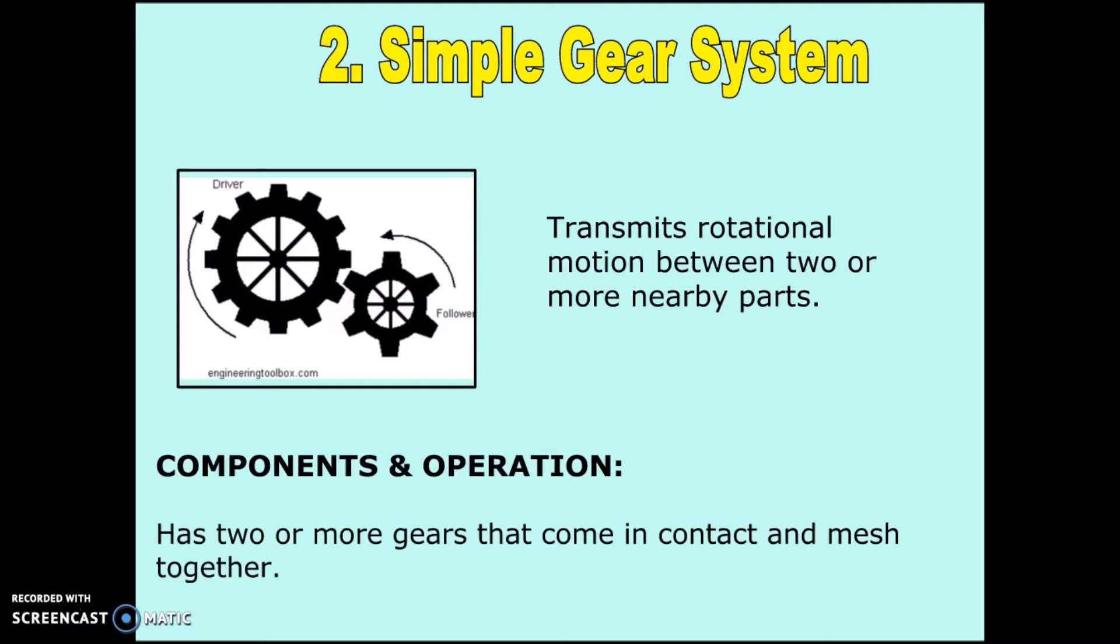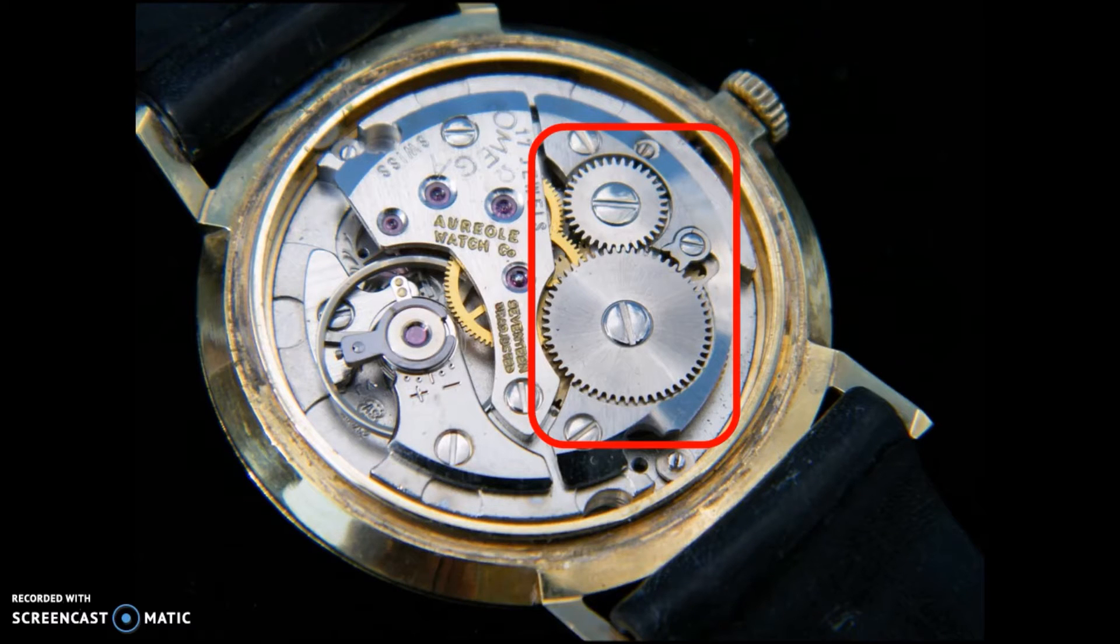Friction gear and simple gear systems are called reversible systems because if you change the wheel that receives the motion, the system will still work. It will just go in the opposite direction. You're probably familiar with simple gear systems, even from looking inside watches and clocks.